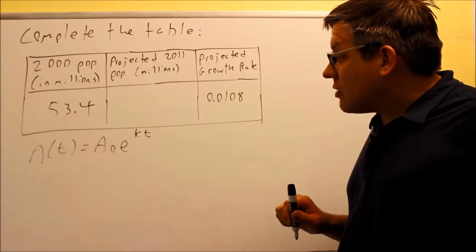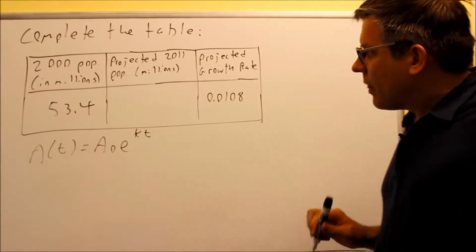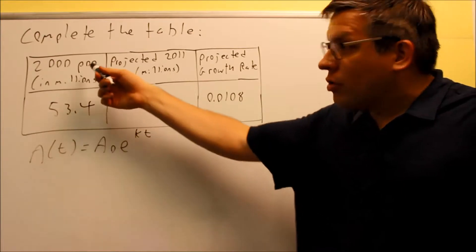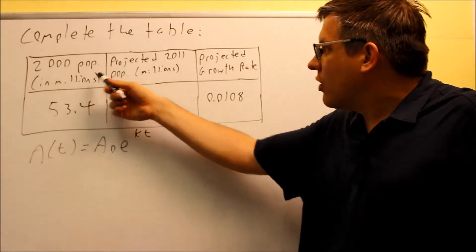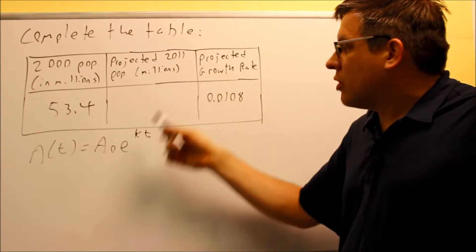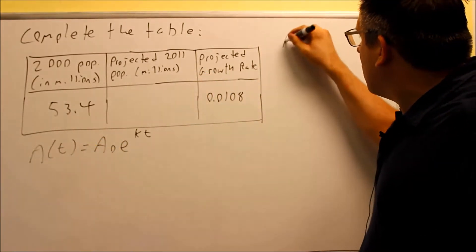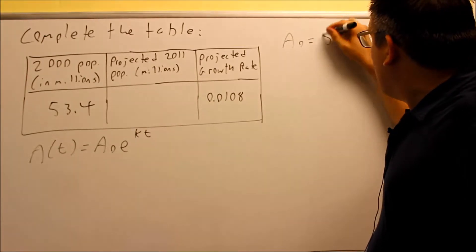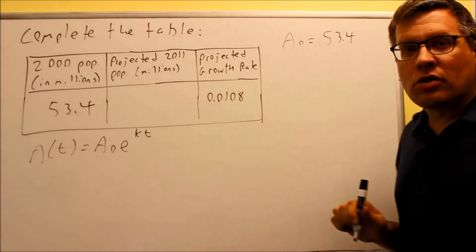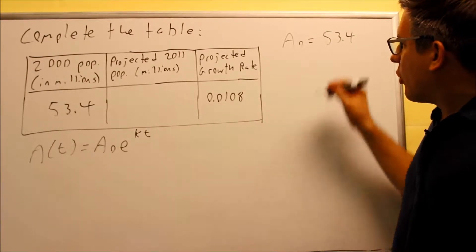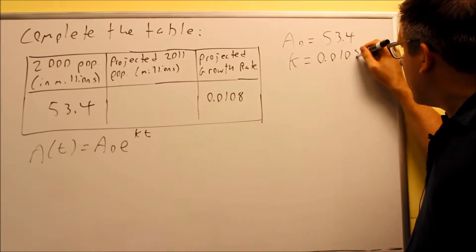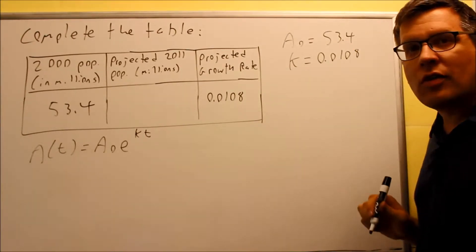Let's talk about what information we're given. We're given the 2000 population — that would be considered your initial population before growth, so A(0) is going to be 53.4. Our growth rate is 0.0108, which is always your k value.